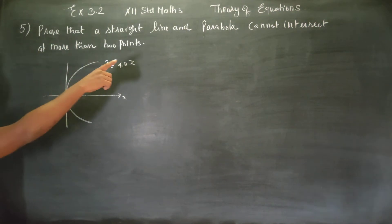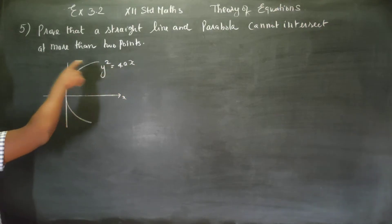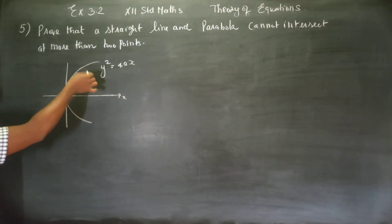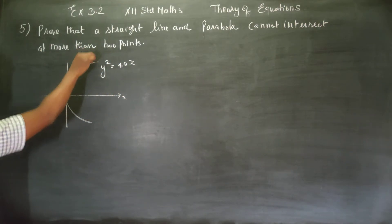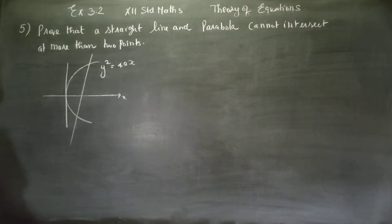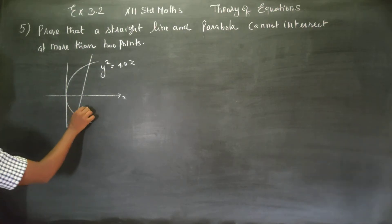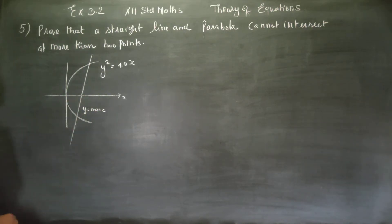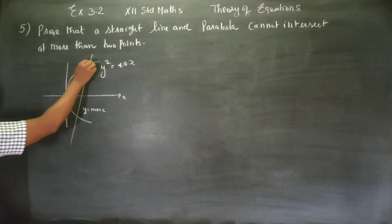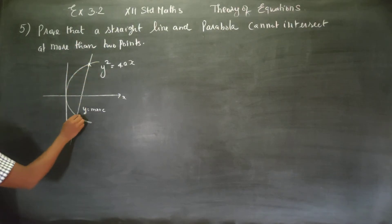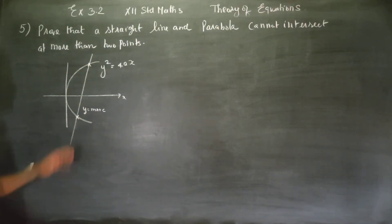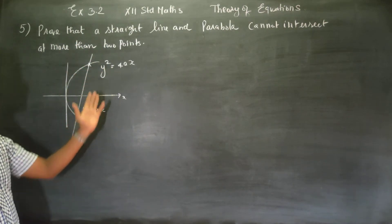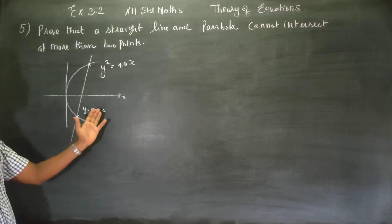Prove that a straight line and a parabola cannot intersect at more than two points. Consider a straight line with equation y is equal to mx plus c. To find the point of intersection, you have to solve these two equations.